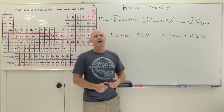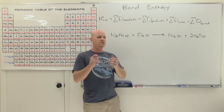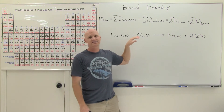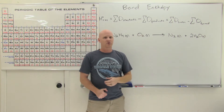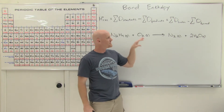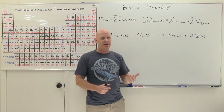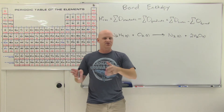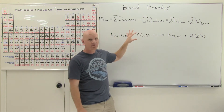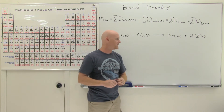This is another way to calculate delta H, but we couldn't use it before because we hadn't learned to draw Lewis structures yet. This method is also more approximate. When we use Hess's Law or enthalpies of formation, those are exact ways to calculate delta H. Bond enthalpy is approximate because the bond energies are averages — they can be slightly different in different molecules — so this gives a decent but approximate result.